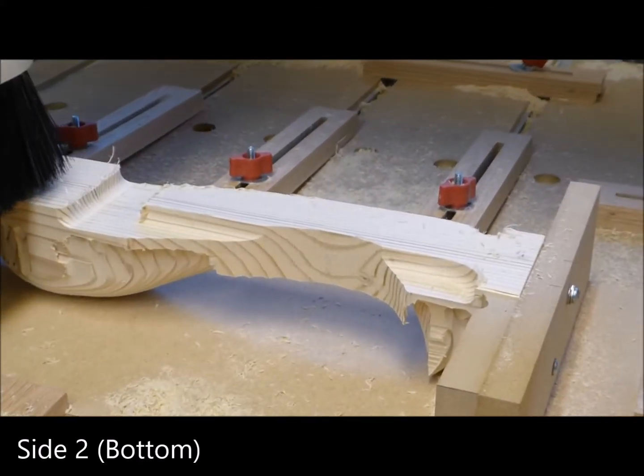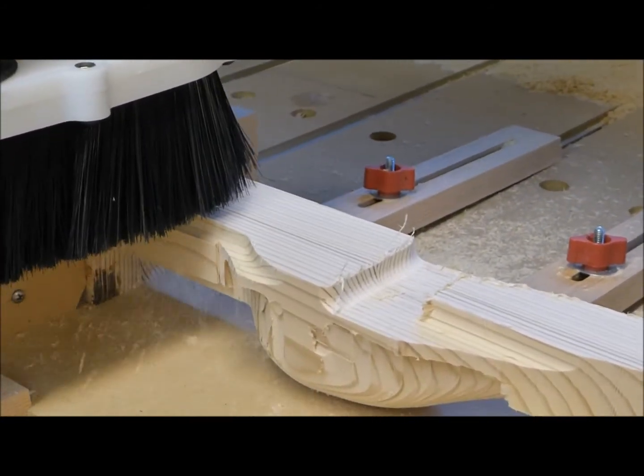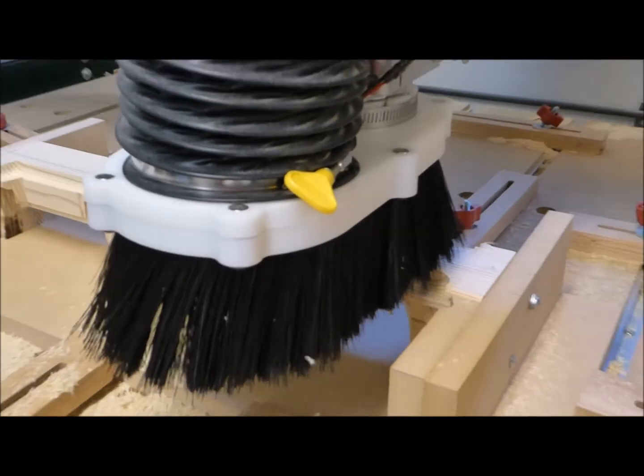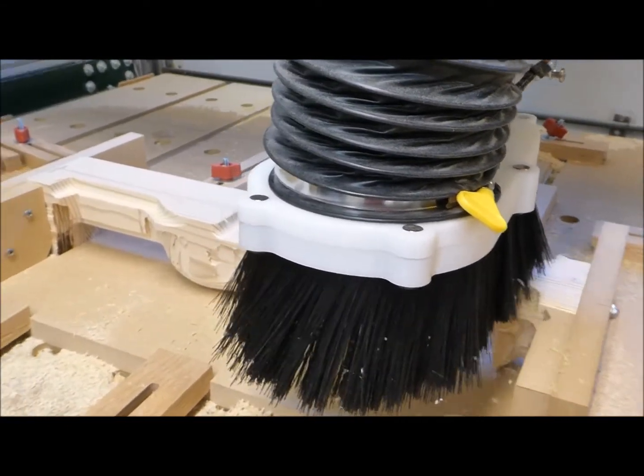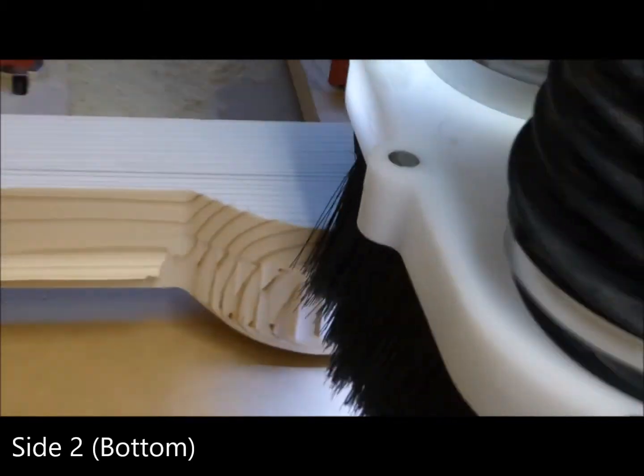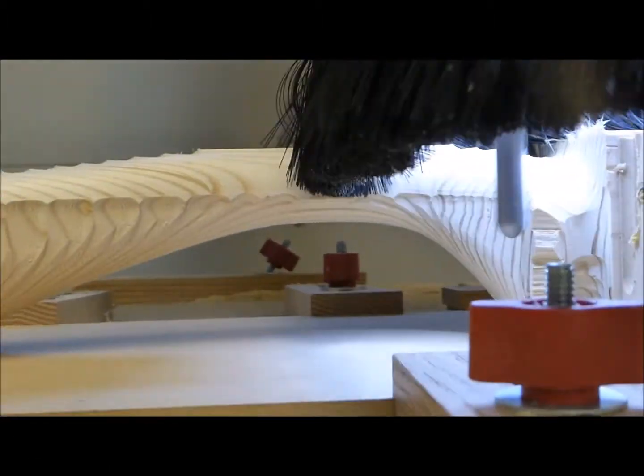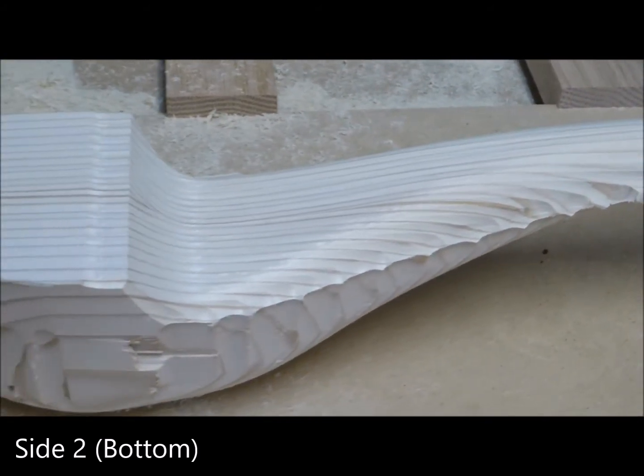This is the roughing pass on the bottom side. Note that the CNC's dust collection shoe is in position now. Now we have moved to the finishing parallel pass for the bottom side. This part of the video is sped up four times normal speed. Here is a shot of the bottom side after the finishing cut. This is the second side, two more to go.